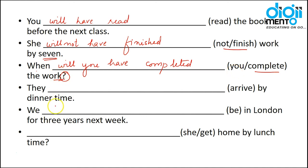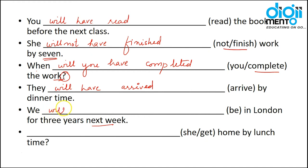'They arrive by the dinner time' — they will have arrived by dinner time. Next: 'We be in London for three years next week' — 'We will have been in London for three years next week.' That means next week we will have been living in London for three years.